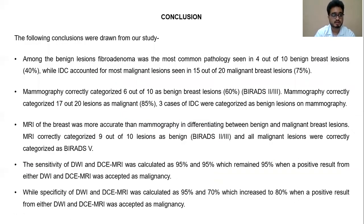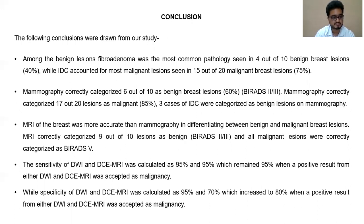Several conclusions were drawn from the study. Fibroadenoma was the most common benign pathology and intraductal carcinoma was the most common malignant pathology. Mammography correctly characterized 6 out of 10 lesions as benign and 17 out of 20 as malignant; however, 3 cases of intraductal carcinoma were falsely characterized as benign. MRI of the breast was far more accurate than mammography in differentiating benign from malignant breast lesions, correctly characterizing 9 out of 10 lesions as benign and all malignant lesions as BIRADS-5. The sensitivity of DWI and dynamic contrast images was 95% and 95% respectively, remaining 95% when a positive result from either was accepted as malignancy. The specificity of DWI and dynamic contrast was 95% and 70% respectively, increasing to 80% when a positive result from either was accepted as malignancy.